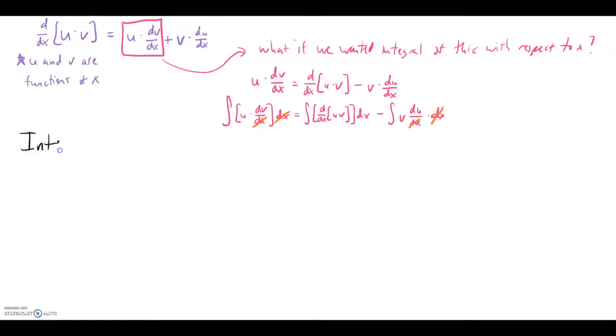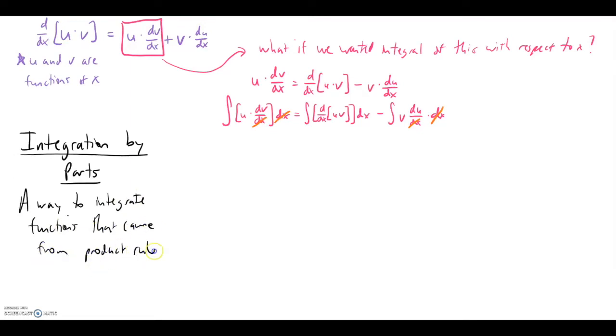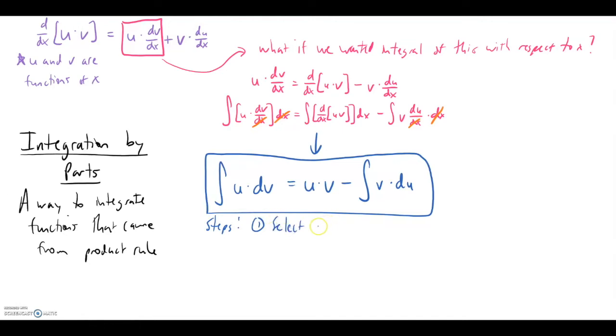And what this all leads us to is the idea of integration by parts, which was the title of this video. And integration by parts is a way to integrate functions that came from the product rule. And much like the product rule for derivatives, integration by parts is a formula-based process. And the formula is the simplified version of what we started above. The integral of u times dv, a function times the derivative of a second function, will equal u times v minus the integral of v times du. Now there are four pieces of information in this formula: u, du, and v, and dv.